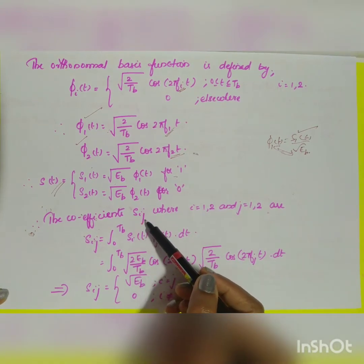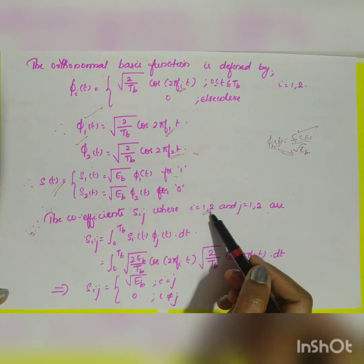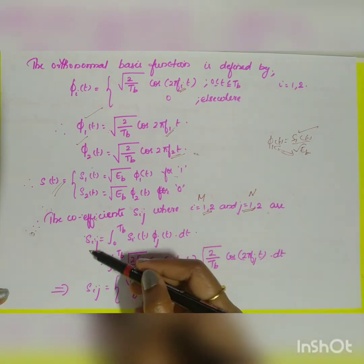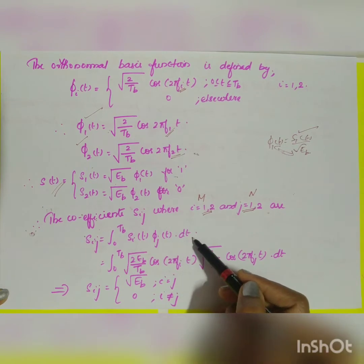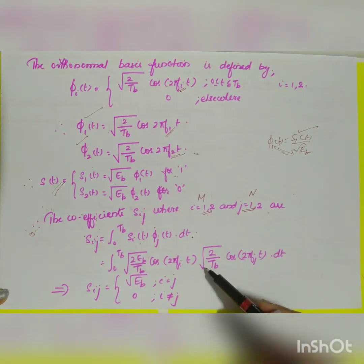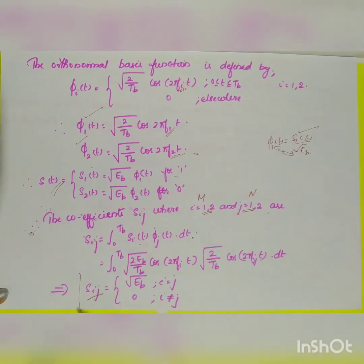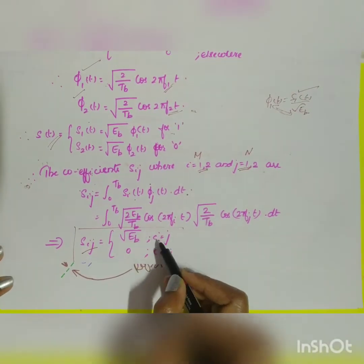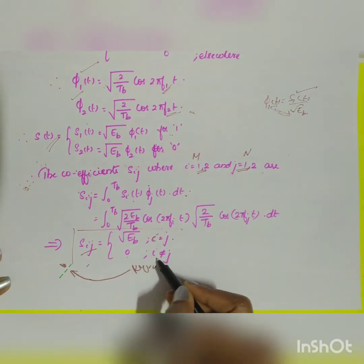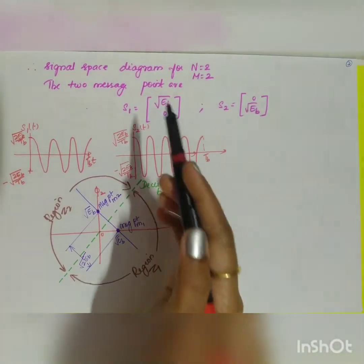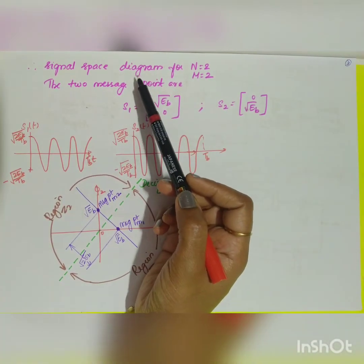The coefficients s_ij, where i = 1, 2 and j = 1, 2, are given by the integral from 0 to T_b of s_i(t) · φ_j(t) dt. After substituting and simplifying, s_ij = √E_b when i = j, and s_ij = 0 when i ≠ j. This gives us the coefficient values for the signal space representation.